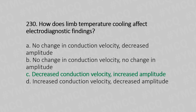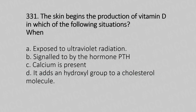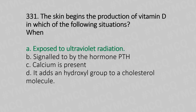Question number 331: The skin begins production of vitamin D in which of the following situations? Option A: when exposed to ultraviolet radiation. Option B: when signaled by the hormone PTH. Option C: when calcium is present. Option D: when it adds a hydroxyl group to the cholesterol molecule. The answer is option A, when exposed to ultraviolet radiation.